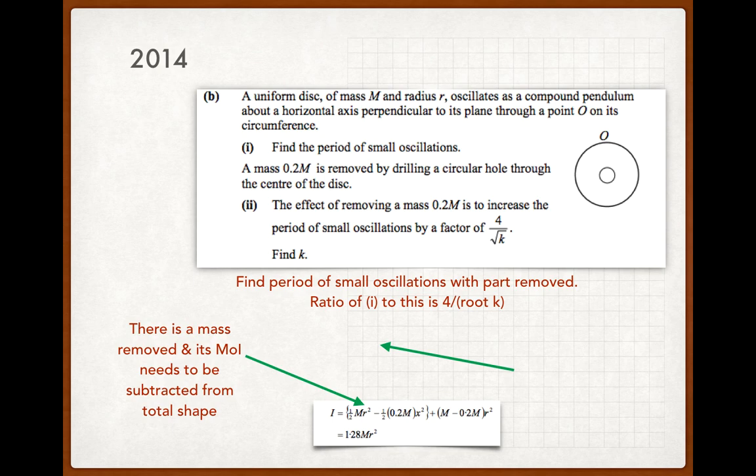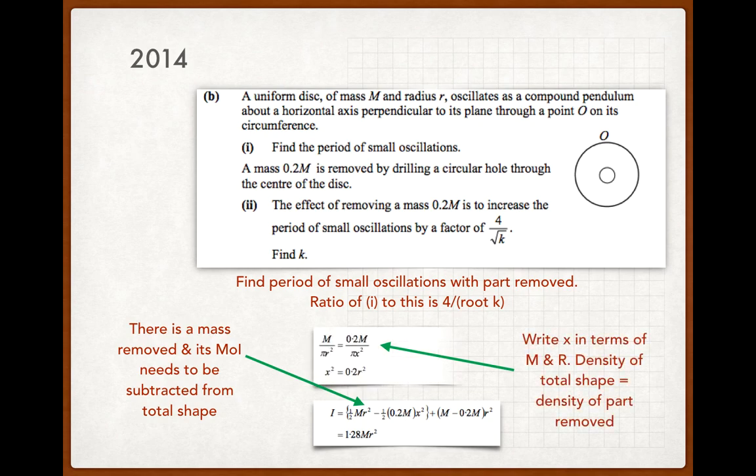Now of course the issue here is how do you get the x, how do you get the radius of that internal circle that's been cut out? We use what I mentioned in the previous slide: because it's a uniform disk, the density of the entire shape equals the density of the part cut out. Or, mass per unit area of the entire shape, m over πr², is equal to mass per unit area of the internal shape, so mass is 0.2m and the area is πx². Get a value for x², substitute it into the line below, and then you can work out the moment of inertia.